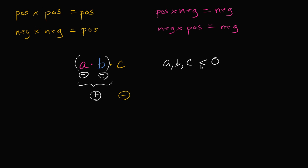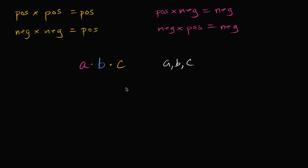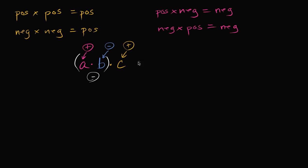So if a, b, and c are all less than zero, then the product a·b·c is going to be less than zero as well — this whole thing is going to be negative. There are other ways to make the product negative too. If a is positive, b is negative, and c is positive, then positive times a negative gives you a negative, and then negative times a positive — different signs — gives you a negative. So this whole thing is going to be negative.